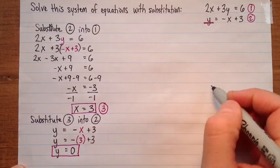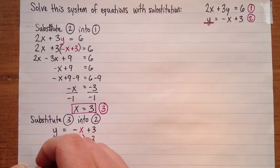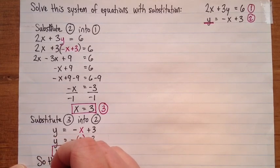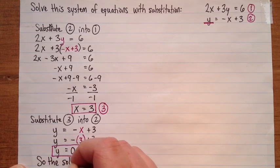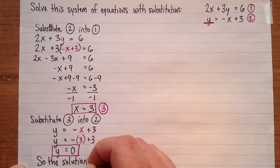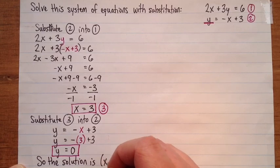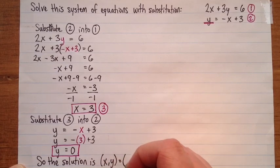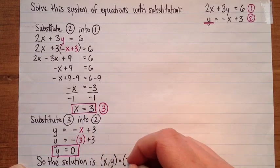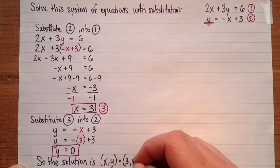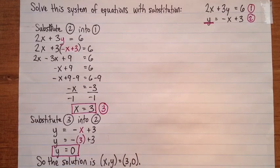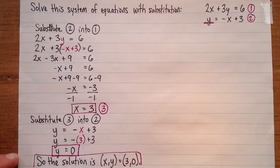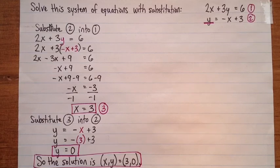We have an answer. The solution is x equals 3 and y equals 0. So that's how you solve a system of equations with substitution.